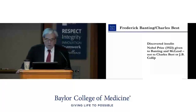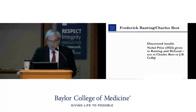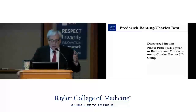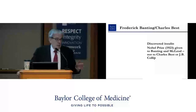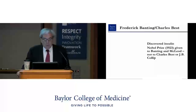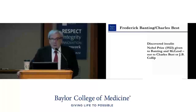Frederick Banting and Charles Best discovered insulin, working on dogs in Toronto. The older man is Banting; the young smiling face is medical student Charles Best. They won the Nobel Prize in 1923—but it was given to Banting and MacLeod, the head of the laboratory, while Best the medical student and J.B. Collip, who was also instrumental in the discovery, were not named. So, for you medical students—graduate quickly so you get your Nobel Prize.